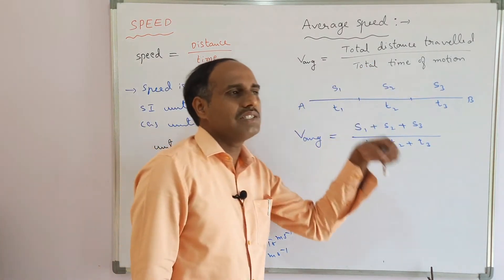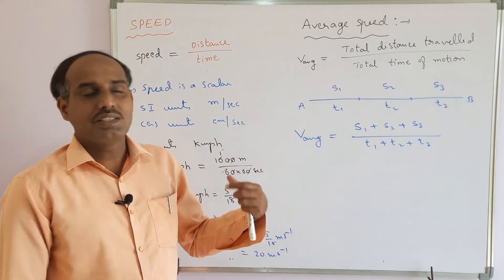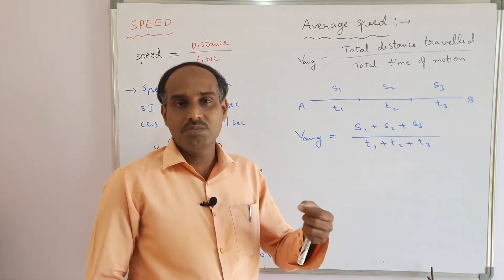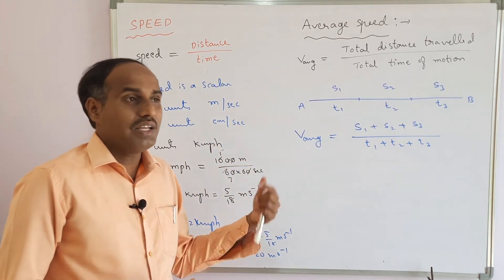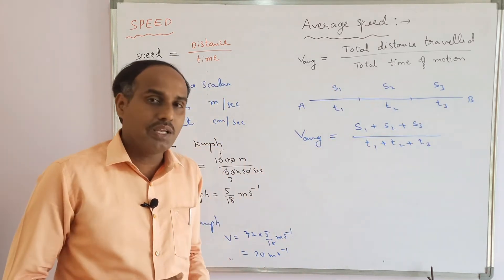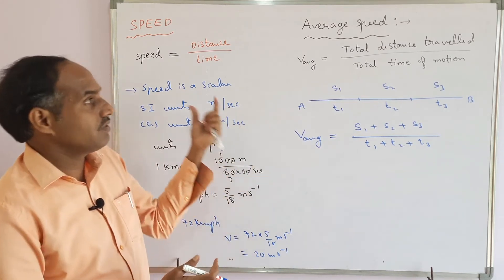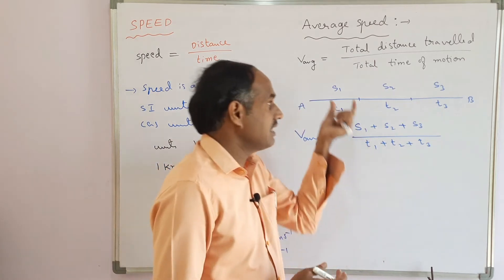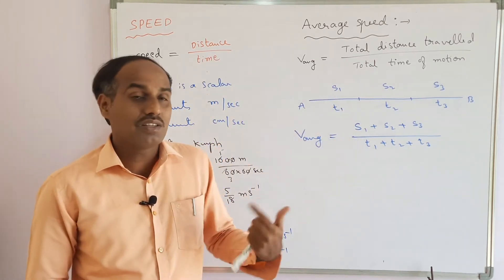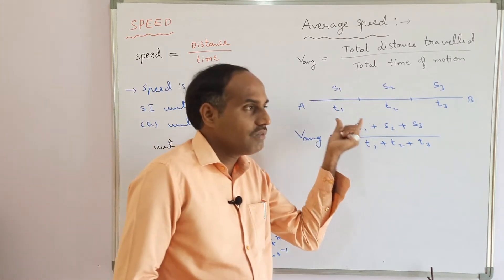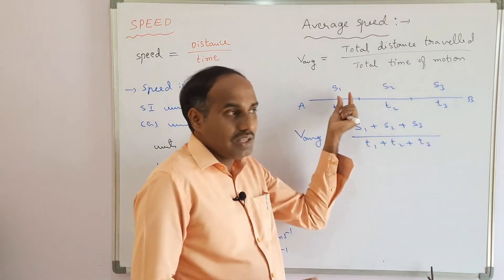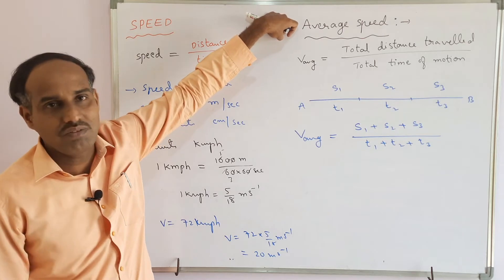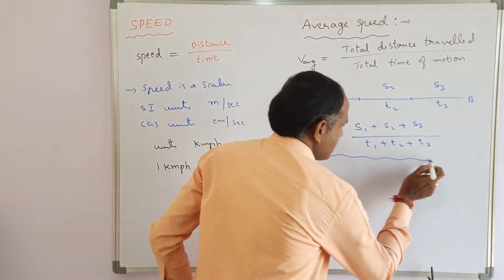Motion is of two types: uniform and non-uniform. Uniform motion means the body covers equal distances in equal intervals of time. Non-uniform motion means the body covers unequal distances in equal intervals of time. Correspondingly, uniform speed means the same speed at every instant, while non-uniform speed means varying speed — and when speed changes, we need to use the concept of average speed.